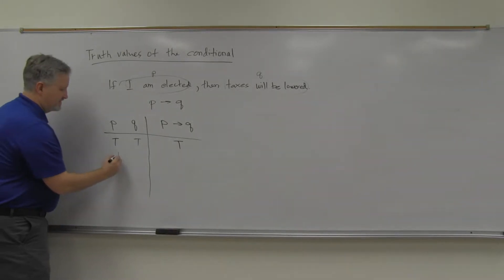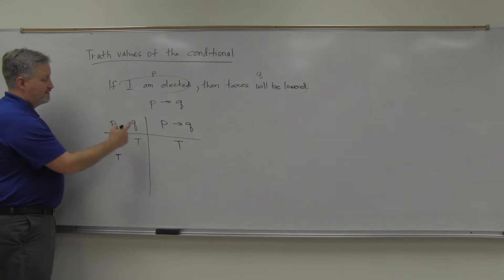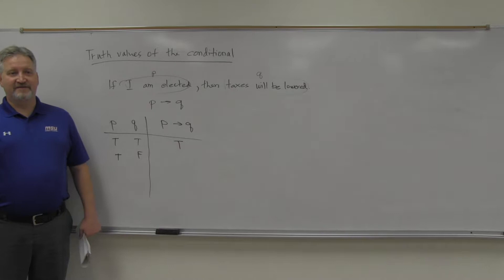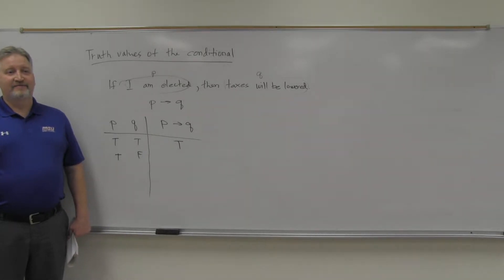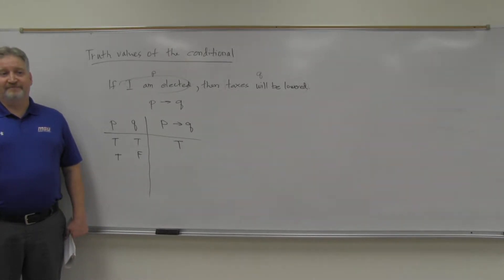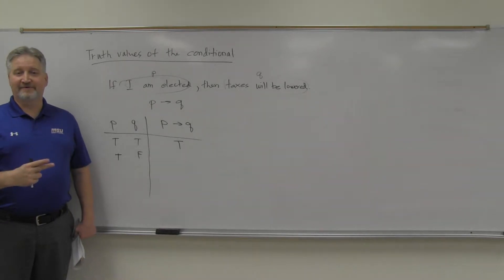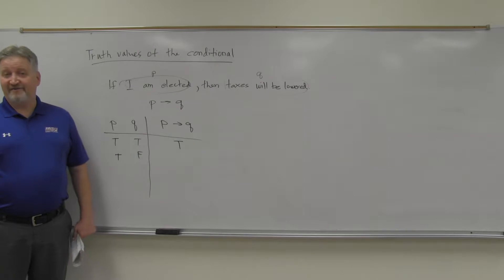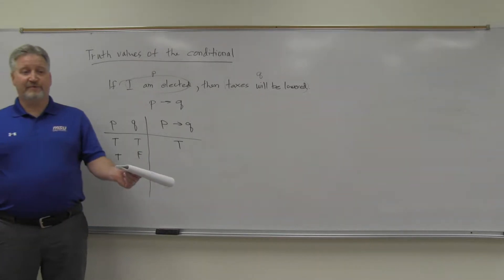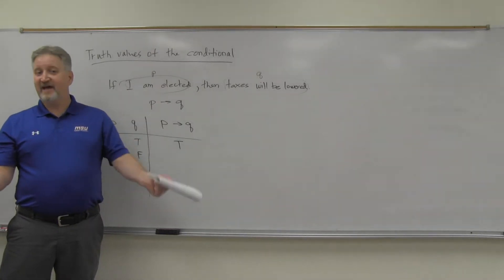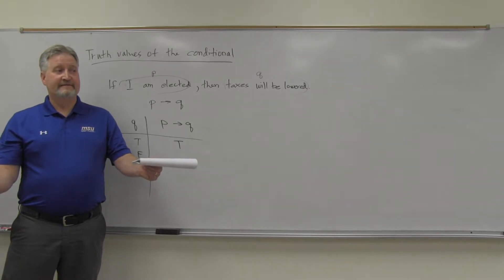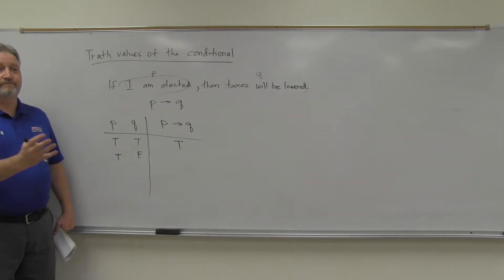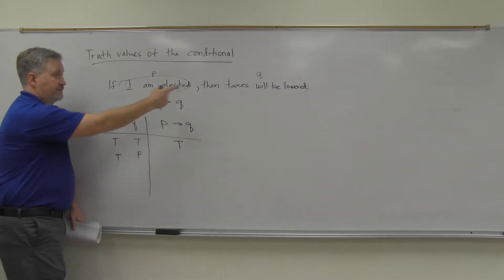Case number two: the politician is elected — that's true — but taxes will be lowered is false. The politician was elected, but taxes will not be lowered. Did the politician tell the truth or tell false? That would be false, right? If I'm elected, then taxes will be lowered — well, you got elected, but taxes will not be lowered. That means this statement is false. True arrow false is false.